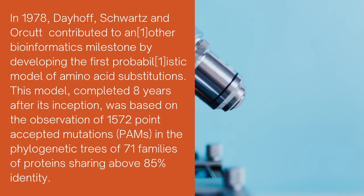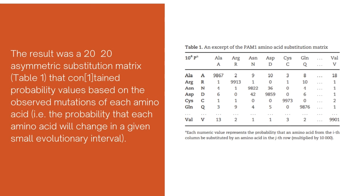In 1978, Dayhoff, Schwartz, and Orcutt contributed to another bioinformatics milestone by developing the first probabilistic model of amino acid substitutions. This model, completed eight years after its inception, was based on the observation of 1572 point accepted mutations (PAMs) in the phylogenetic trees of 71 families of proteins sharing above 85% identity. The result was a 20×20 asymmetric substitution matrix that contained probability values based on the observed mutations of each amino acid — i.e., the probability that each amino acid will change in a given small evolutionary interval.